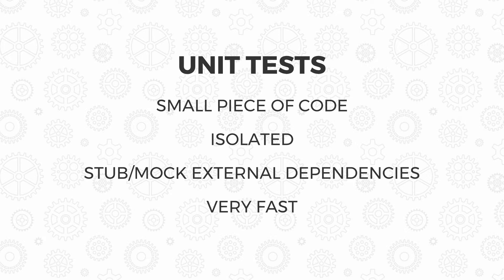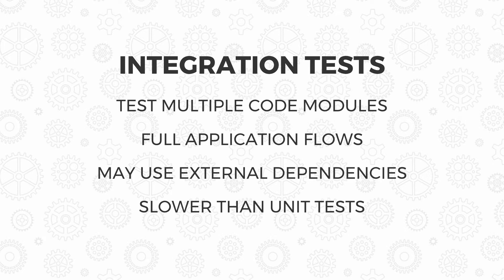Stubs and mocks allow us to fake external dependencies. Unit tests should be very fast, so you'll end up writing a lot of them. Next up, we have integration tests. Integration tests are a bit bigger than your unit tests — they test multiple code modules and the full application flow. They may use some external dependencies, like your database or external API requests, but you can also mock those. Generally, they're slower than unit tests, so you'll write fewer of them.